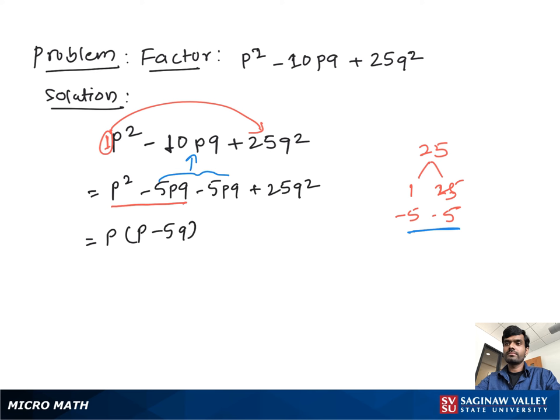From the second pair we take out minus 5Q as a common factor, then we have minus 5Q times P minus 5Q.